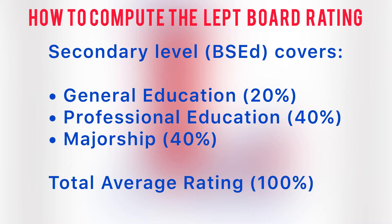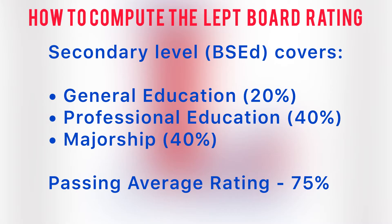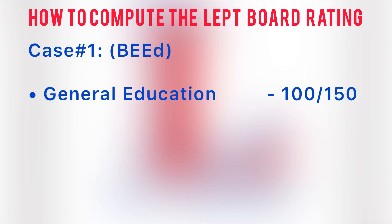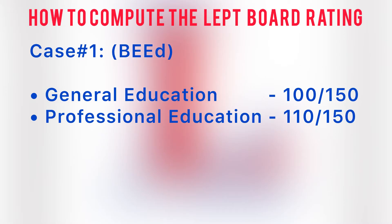To pass the LEPT, a test taker must achieve a minimum weighted average of 75%. For example, a BE ed taker got a score of 100 out of 150 questions in general education, and 110 out of 150 questions in professional education. It will be computed as follows.